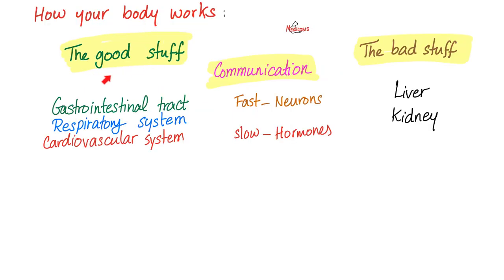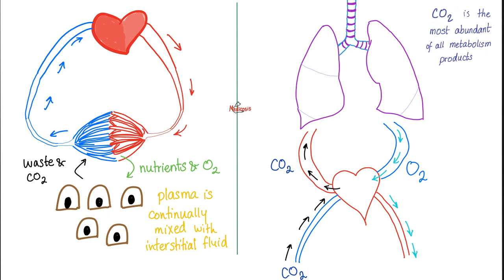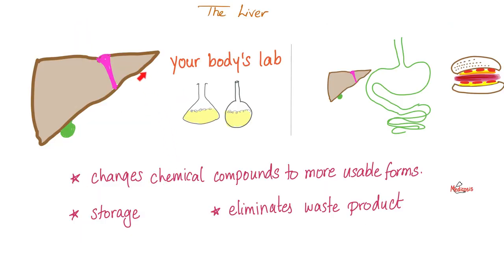How your body works: let's get the good stuff into your body, which includes oxygen and nutrients. Let's get the bad stuff out of your body via metabolism, detoxification, and excretion — which happens through the kidney and the colon. Let's also communicate among different body parts: you have the nervous communication system, which is super fast, and the hormonal system, which is slow. Your lungs get carbon dioxide out and oxygen in; the digestive system gets nutrients in; and the cardiovascular system distributes oxygen and nutrients to all your body cells. You can thank your liver for metabolism.